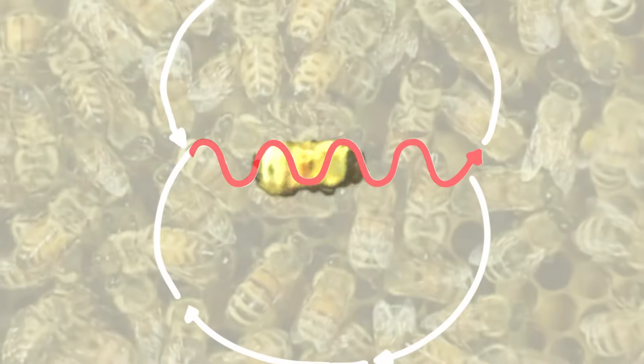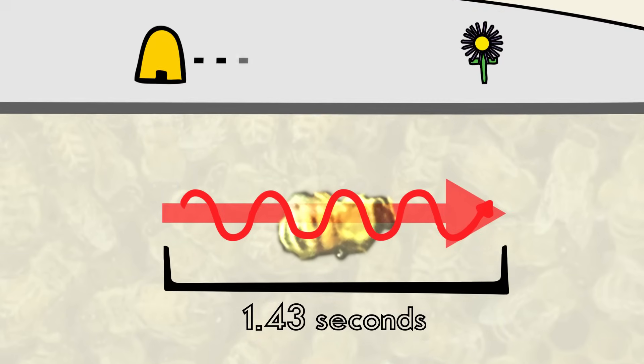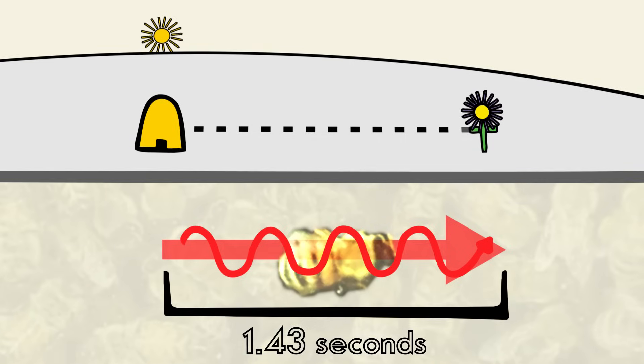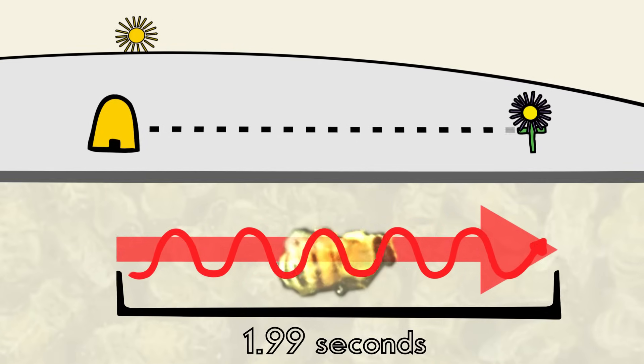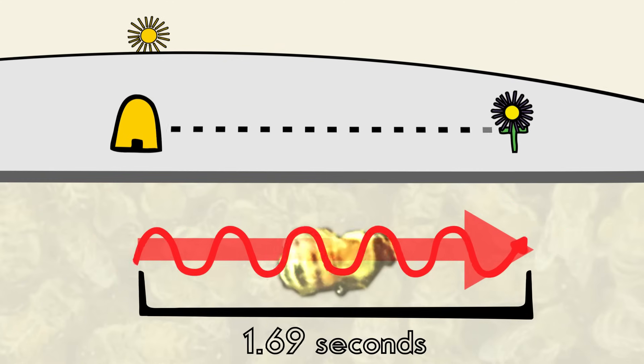The central waggle section of the bees' dance also contains information about the distance to a food source. Longer times spent in this part of the dance means that the food is further away. Shorter durations mean that the food is closer by.